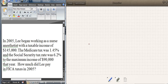Okay, here's the next problem. In 2005, Lee began working as a nurse anesthetist with a taxable income of $145,000. The Medicare tax was 1.45%, and the Social Security tax rate was 6.2% to the maximum income of $90,000 that year.